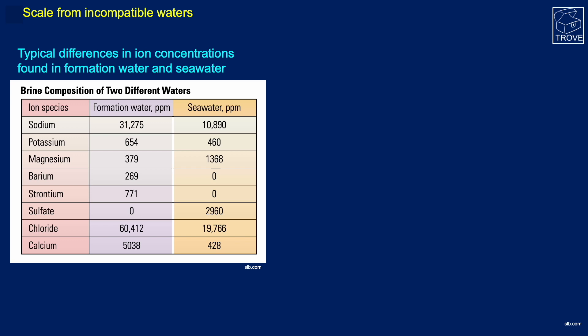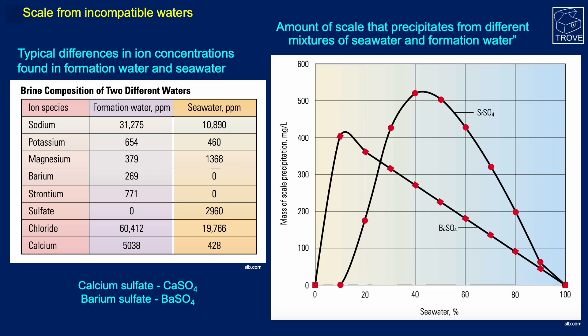Scaling due to incompatible waters can be a real problem throughout the production life of a well or field. Here we're looking at a table showing some cations and anions in formation water and seawater. There are two major concerns: one with calcium sulfate or calcium carbonate, the other with barium sulfate. This diagram shows the percentage of seawater being recovered - initially there's no issue, but as more seawater comes in we get precipitation of a lot of barium sulfate initially, and latterly strontium sulfate. Only at very high seawater concentrations - when we've basically flushed all the formation water through the reservoir - do we get back to non-precipitation.